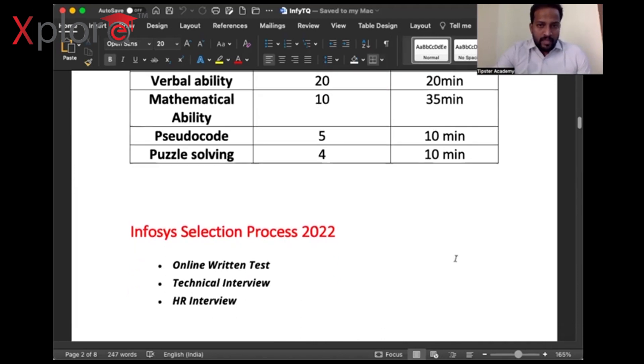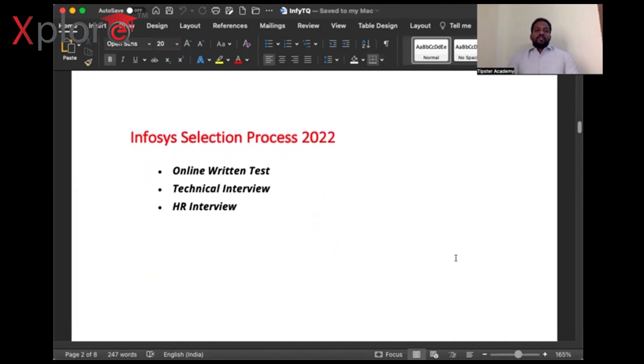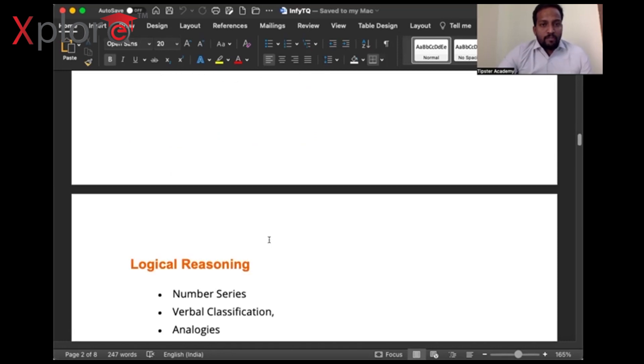I'll take you through the next processes. The Infosys selection process 2022 basically consists of three steps: one is online written test, second is technical interview, and third is HR interview. We cannot predict it at all; it's just like weather. Even if a forecast says 40% or 90% chance of rain, you may not get it. Likewise, any selection process may change according to the requirement and recruitment. For now, let us assume it as online written test, technical interview, and HR interview. From past experience, these three are very crucial for Infosys selection process.